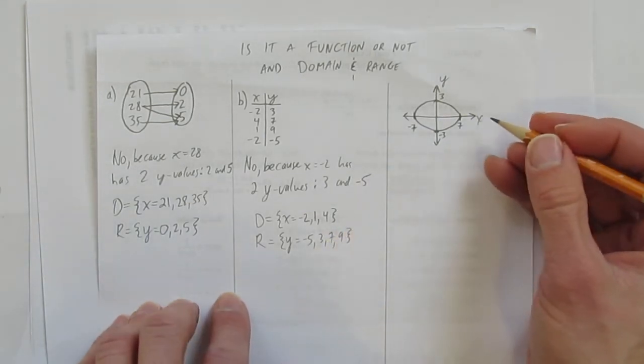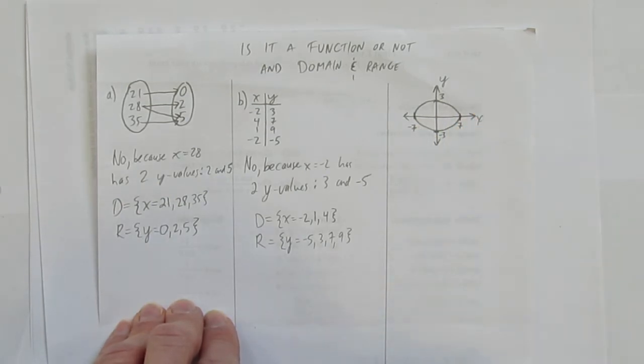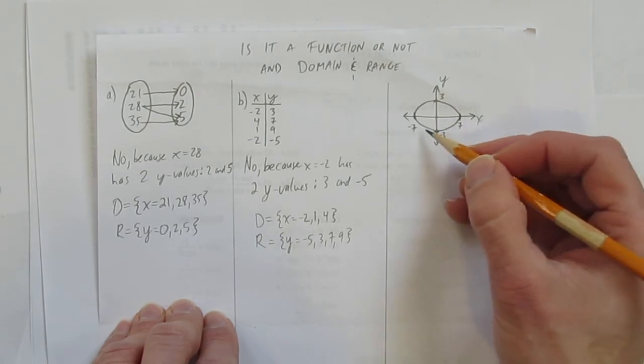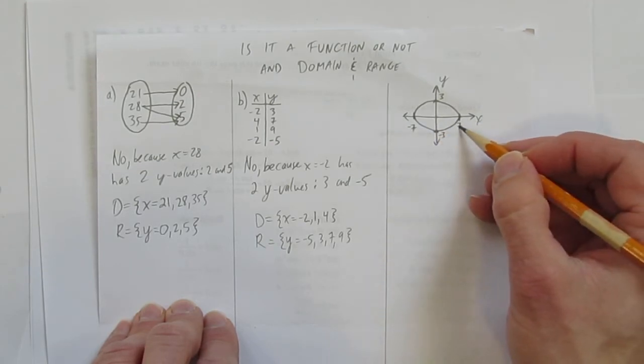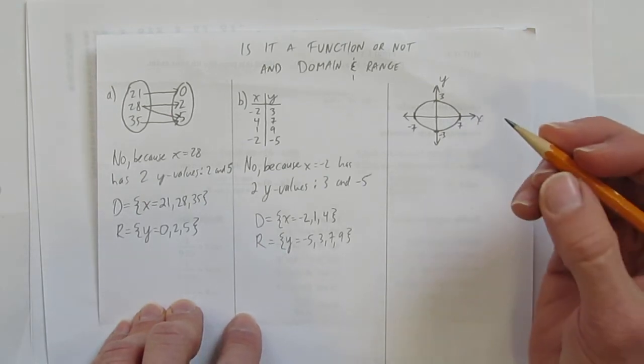We got a last one, which is a sketch. A very rough sketch, but notice I put my arrows, labeled my x and y axis, and I labeled the endpoints of this oval. It's negative 7 and 7, and negative 3 and 3. Is it a function?